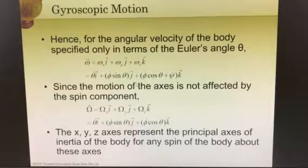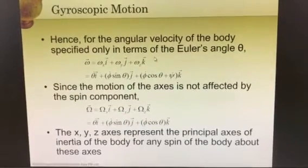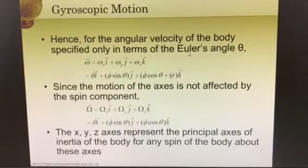We go into details. In terms of Euler's angle θ, we can get this equation. This is the angular velocity upon the small x axis, y axis, and z axis.